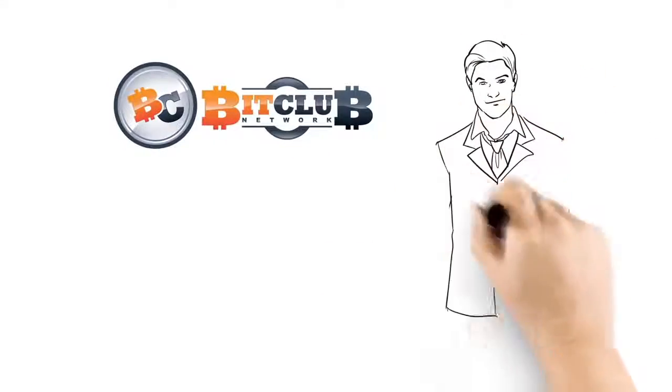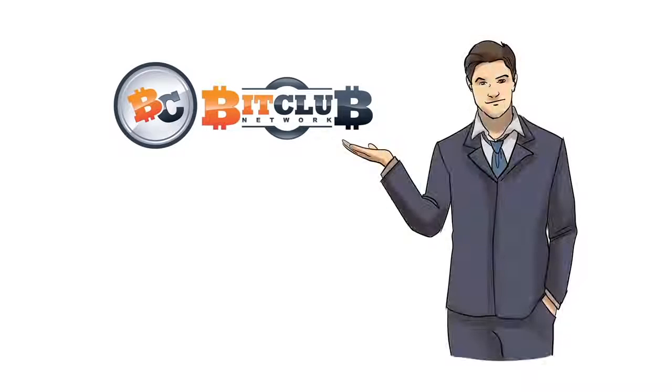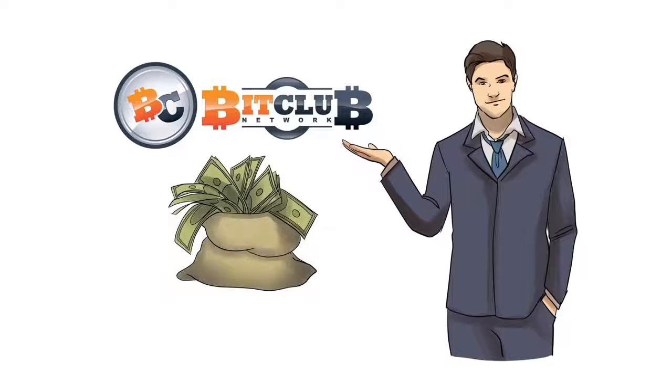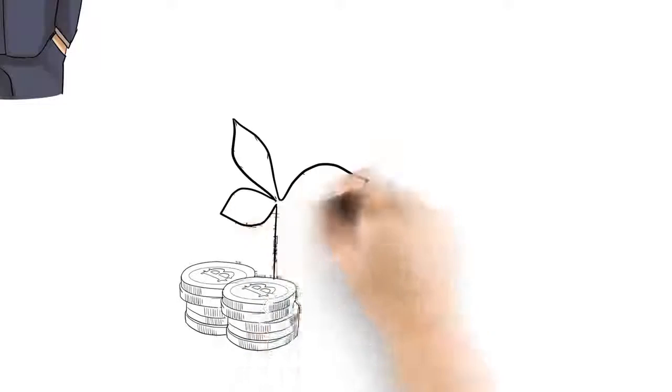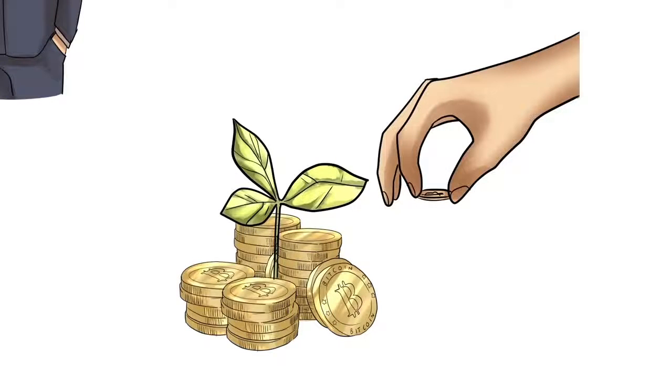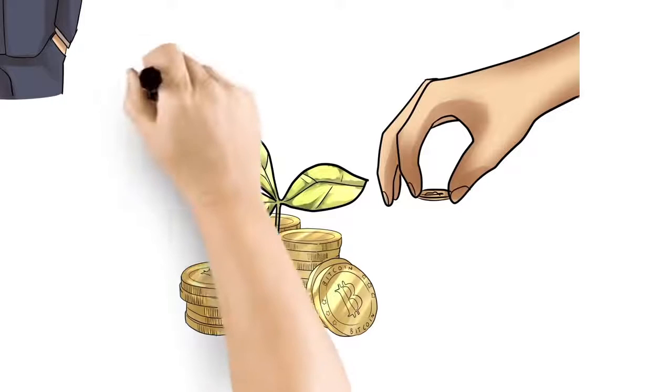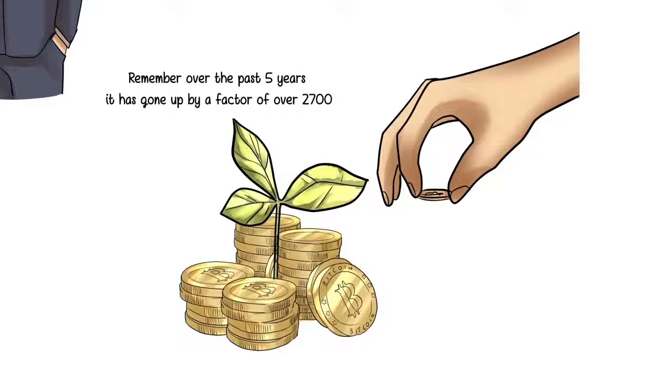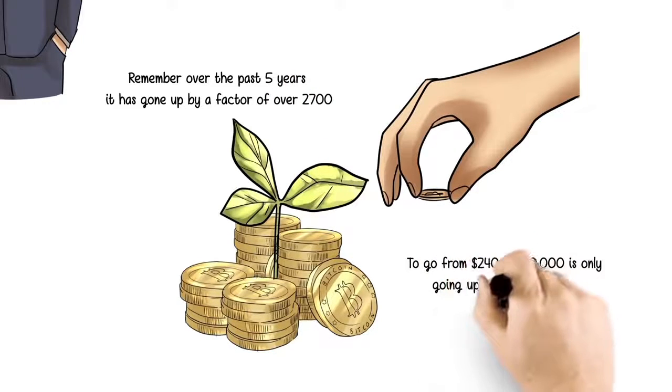Here is why people are joining BitClub Network. Most of those smart rich people that are investing hundreds of millions of dollars believe the price will be over $10,000 for one Bitcoin in the next three years. If you just buy Bitcoin and sit on it for the next three years, I think everyone believes that it is an awesome investment. Remember, over the past five years, it has gone up by a factor of over 2,700. To go from $240 to $10,000 is only going up by a factor of 41.